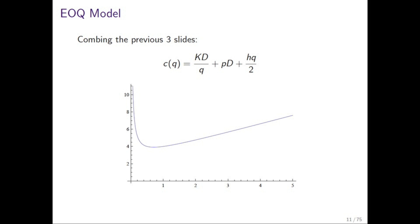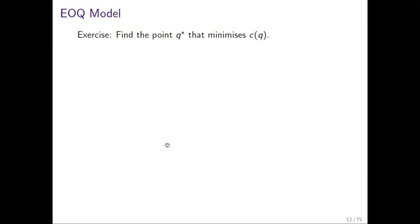And so then we put those three terms together and we get the cost as a function of Q in the EOQ model. And in general, the curve looks like this, and we want to find the point that minimizes that curve. And that point Q star is what we call the EOQ, the economic order quantity.